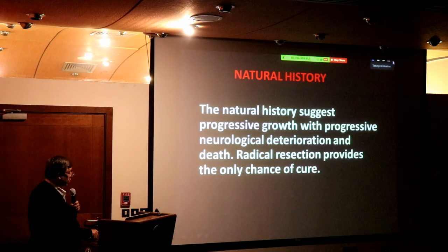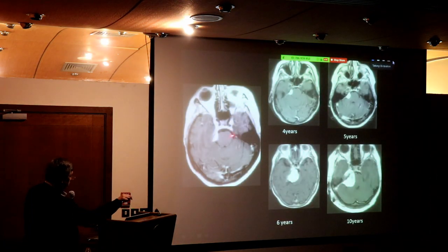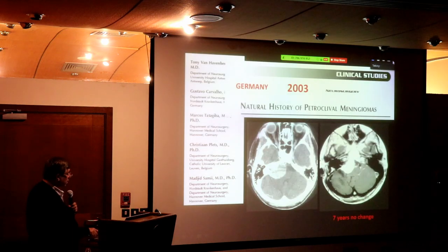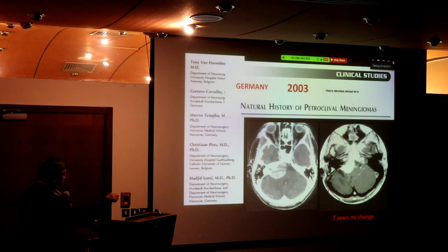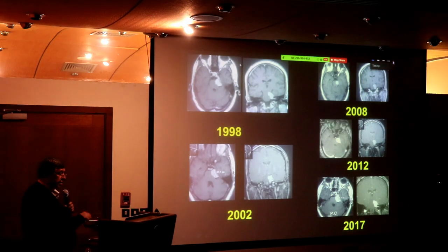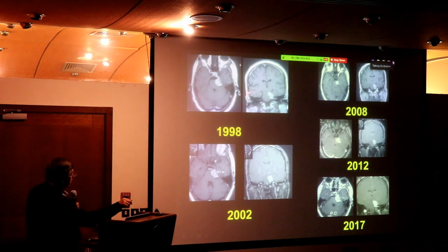These tumors grow over time — here is a meningioma at presentation, four years later no change, five years later no change, then increased at six years, increased at ten years. However, there are odd cases: a paper from Germany showed clival meningioma size remained the same after seven years. In my series, I discovered a petroclival meningioma in a lady who continued follow-up and showed no change whatsoever.